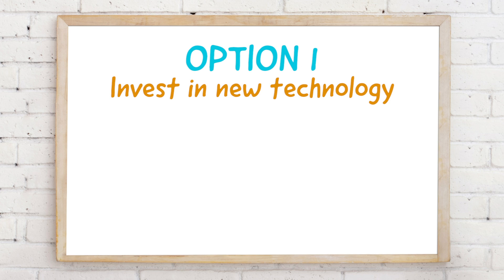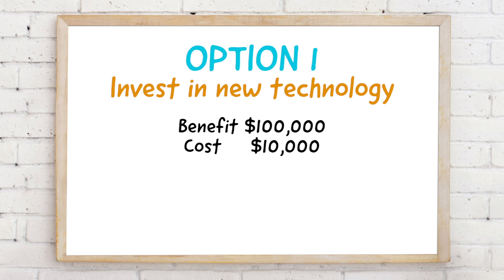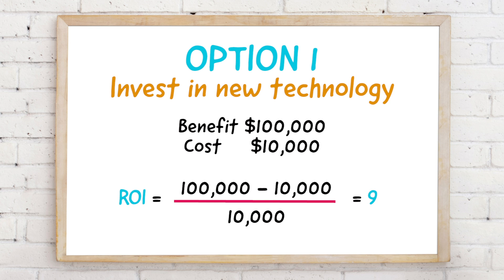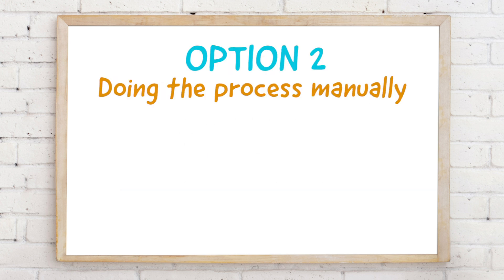You've been asked which one is best for the company. For option one — purchasing the new software — let's say the benefit is going to be one hundred thousand dollars and the cost is going to be ten thousand dollars. The ROI calculation shows that you're going to be able to 9x your money, or increase your money by 900%, if you invest in option one.